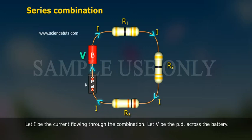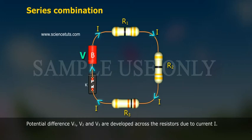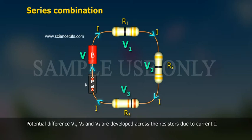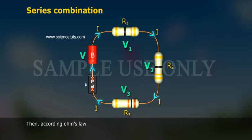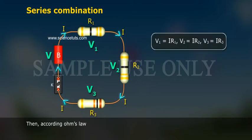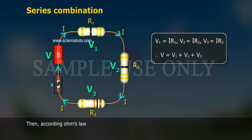Let I be the current flowing through the combination and V be the potential difference across the battery. Potential differences V1, V2, and V3 are developed across the resistors due to current I. Then, according to Ohm's law: V1 = IR1, V2 = IR2, V3 = IR3.